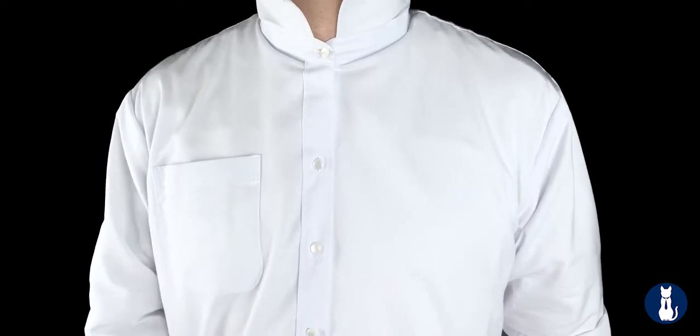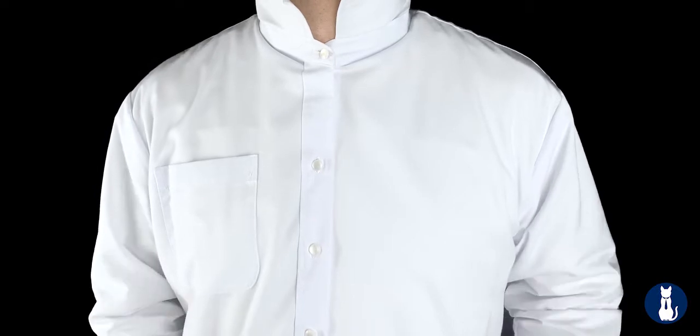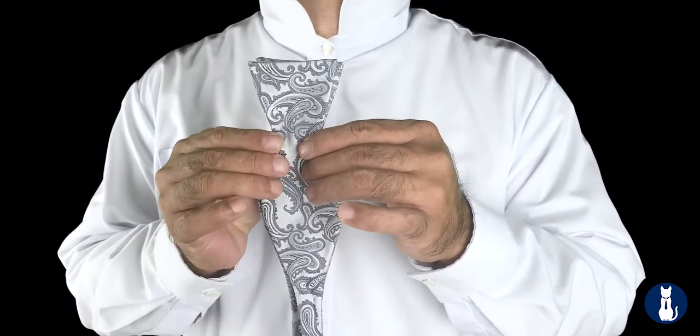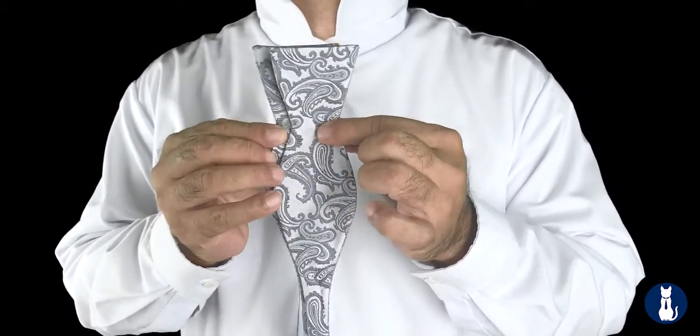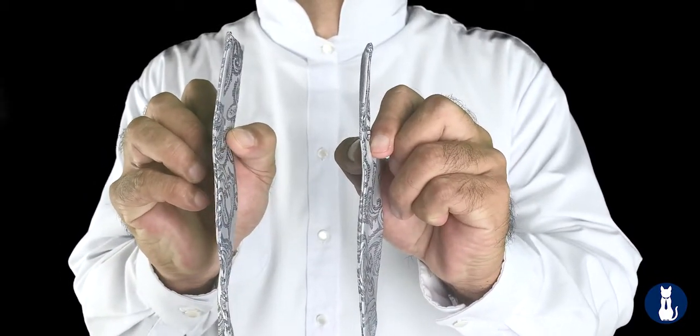This demonstration should last about five minutes so it's at a pace you can follow. Beforehand, take note that your self-tie bow tie has more or less identical ends with a seam on the edges, but two different sides.